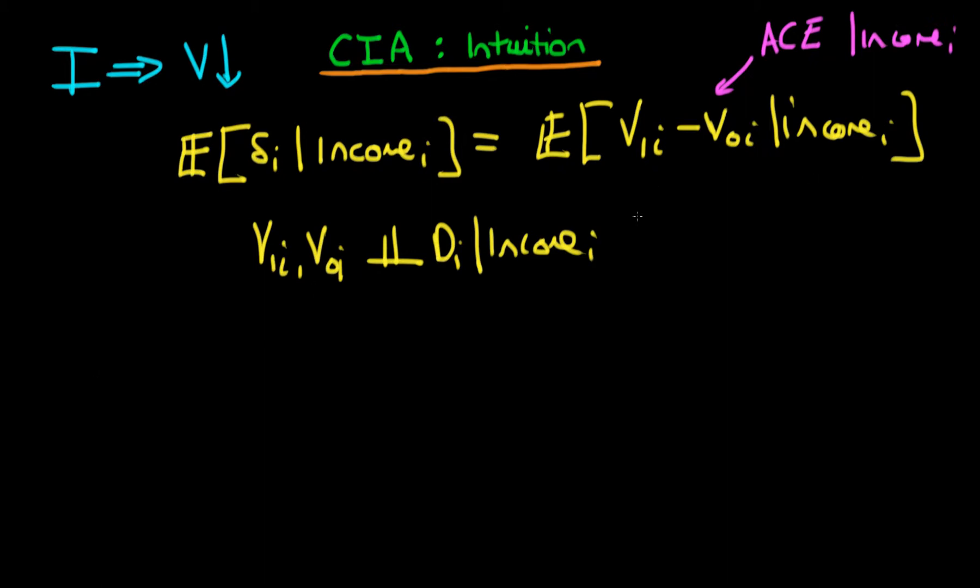What we can do is we can think about Di, whether or not a particular state receives infrastructure spending, or the decision as to whether or not a state receives infrastructure spending, as being composed of two components. There is the component of Di which is due to selection on the basis of income.